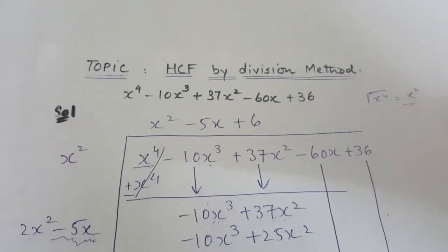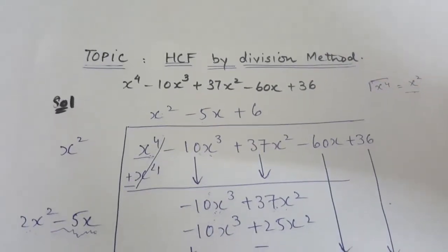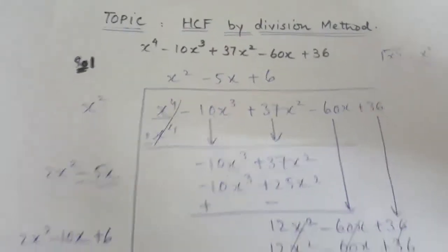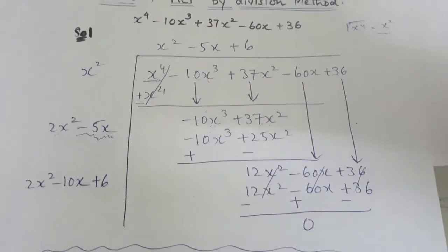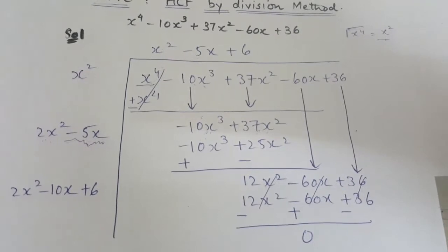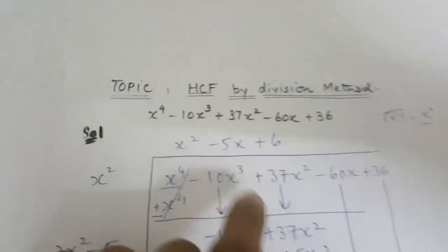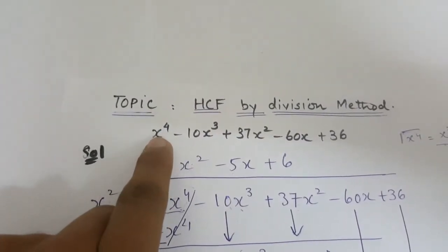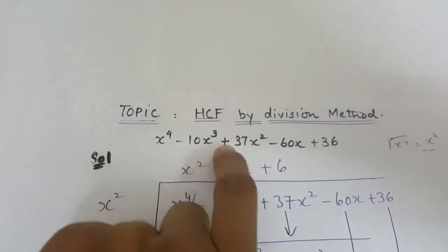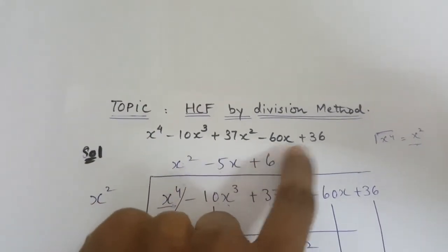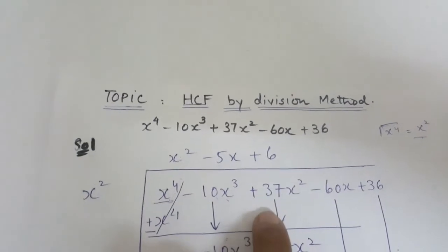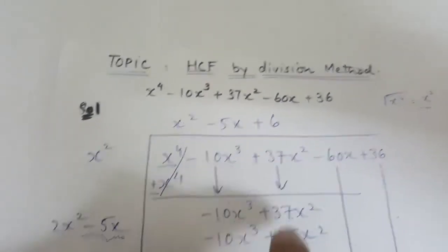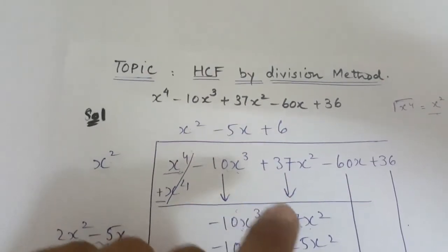Hey, what's up guys! Today I'm going to show you how to find the HCF of an algebraic expression by division method. The first step is writing the polynomial x⁴ - 10x³ + 37x² - 60x + 36 inside a division symbol, which you can see I already did.